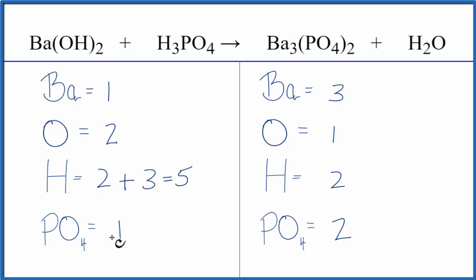Let's see. Why don't we start by balancing the bariums? We have three here and one here. So we could put a three right here. One times three. That equals three. So the bariums, they're balanced.